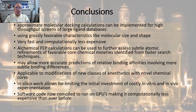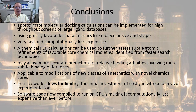Such approximate techniques are very fast computationally and can be used to screen large databases. However, when it comes to making more accurate predictions of relative binding affinities involving more subtle binding differences, especially within a congeneric series of propofol compounds, the alchemical free energy perturbation calculation can be further used to assess these effects. Such calculations are applicable to modifications of new classes of anesthetics with novel chemical cores, such as our recently patented new class of anesthetic agents. In silico analyses also allow for more efficient implementation of otherwise costly in vitro and in vivo experimentation by placing initial limits on subsequent experiments.